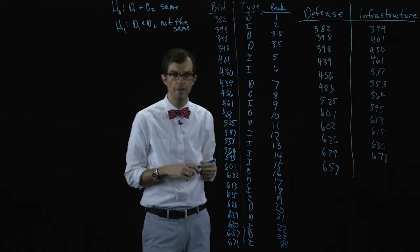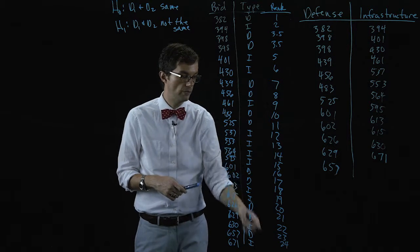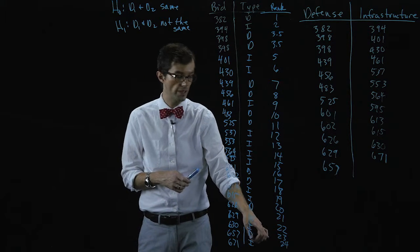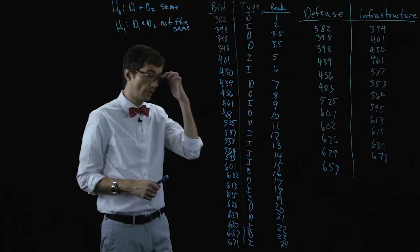Okay, so we had twelve bids each so our total is twenty-four bids. So the largest value is going to have a rank of n-one plus n-two which is twelve plus twelve which is twenty-four.